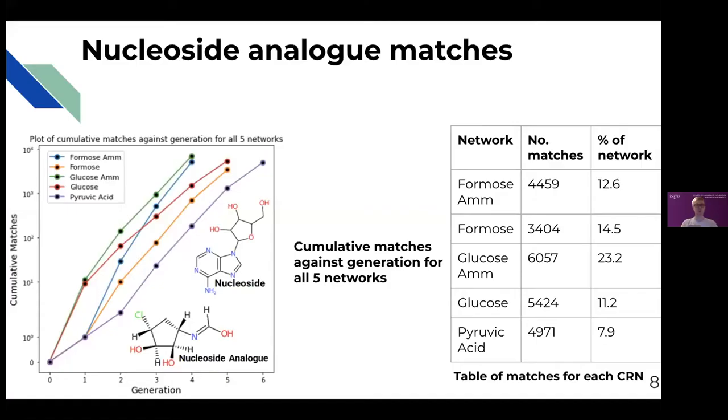So what did we find out? Well, we discovered a large intersection does in fact exist between the library of nucleoside analogues and the products of the CRNs simulating prebiotic Earth conditions. The fewest matches were found for the formose CRN, 3,404 representing 14.5% of the network, and the most for the glucose ammonia network, 6,057 representing 23.2% of the network.